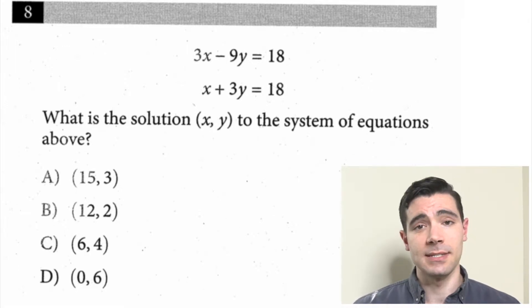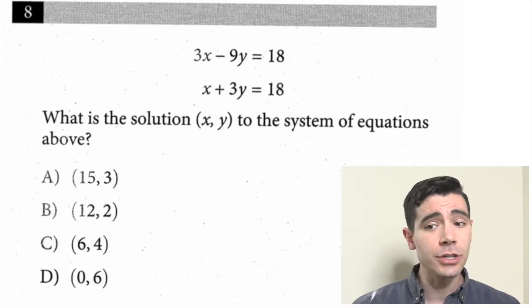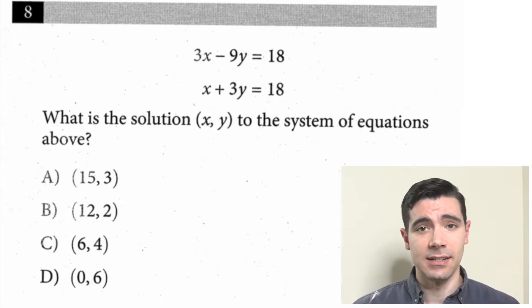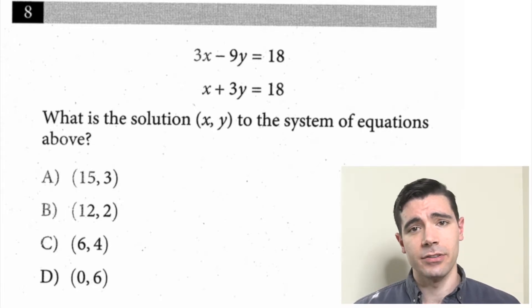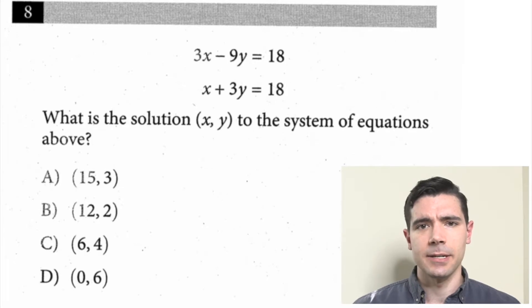For most systems of equations on the PSAT and SAT, the best method is going to be combination. You could substitute, right? You could have it so that it said x equals negative 3y plus 18, and then substitute that in for x in the other equation, but it's going to get kind of dicey. Instead, we can get like coefficients and combine the two equations to make one of the terms drop out.